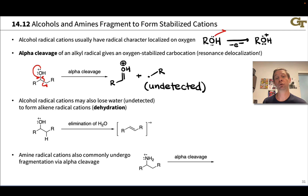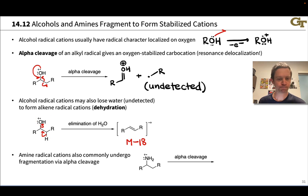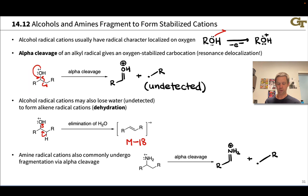Alcohol radical cations can also lose water, producing an alkene radical cation. This is effectively an elimination of H and OH from the radical cation, giving a fragment 18 mass units less than the molecular ion — that 18 corresponding to the molar mass of water. Like alcohols, amine radical cations also commonly undergo alpha cleavage via exactly analogous electron flow, producing a new C=N pi bond and a stabilized iminium cation — with positive charge shared between nitrogen and carbon — plus an undetected radical fragment.